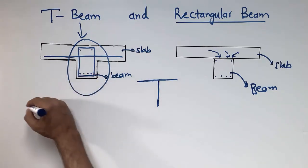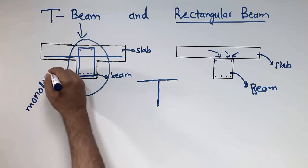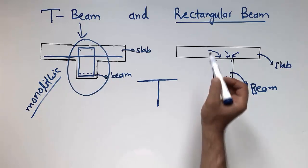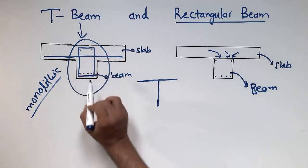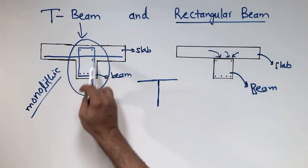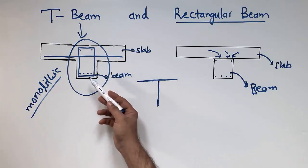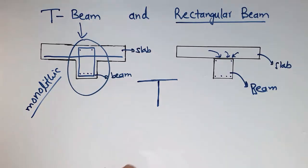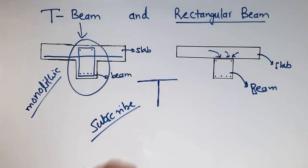This monolithic joint between the two members is the main difference between the T-beam and the rectangular beam. In the rectangular beam, there is separation of the two different members. In the T-beam, there is no separation — we have embedment of the beam reinforcement into the slab and slab reinforcement into the beam, so they act like one member with different analysis and design. Hope you guys understand, and don't forget to subscribe to the channel for more engineering videos. Thank you for watching.